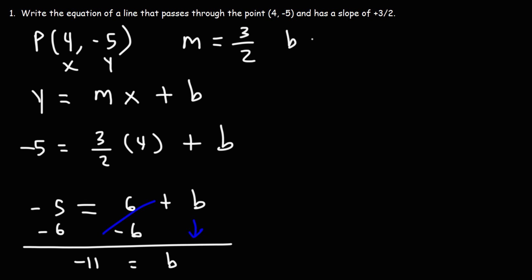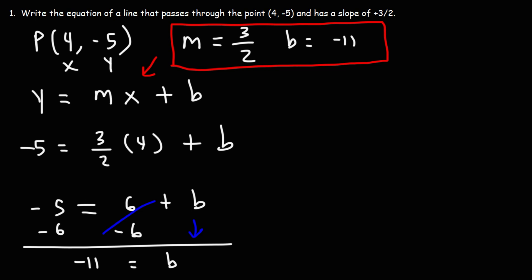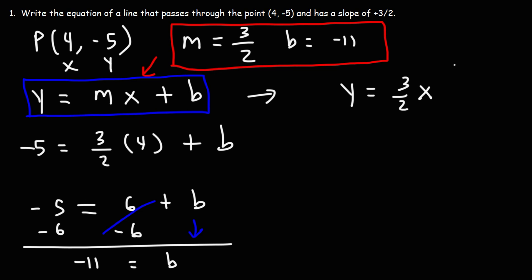Now that we have the slope and the y-intercept, we can write the equation of the line. All we do is plug m and b into the slope-intercept formula to get the linear equation in slope-intercept form. The answer is y = (3/2)x - 11. That's the answer in slope-intercept form.